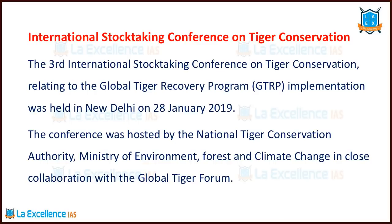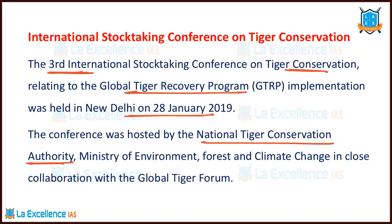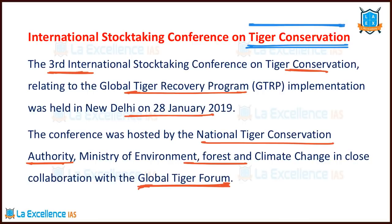With regard to Tiger Conservation, the third International Stocktaking Conference on Tiger Conservation was held in New Delhi last year. It is related to the Global Tiger Recovery Programme. This conference was held by the National Tiger Conservation Authority under the Ministry of Forest and Climate Change, in collaboration with the Global Tiger Forum. India entered the Guinness Book of Records for setting up the most camera traps to calculate tigers under our tiger census, done by NTCA — National Tiger Conservation Authority. These are the important conventions and issues to remember for Prelims 2020. If you have any questions, please let us know in the comment section. All the very best. Thank you.